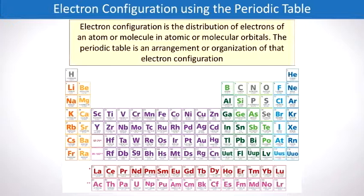Electron configuration is the distribution of electrons of an atom or a molecule in the atomic or molecular orbitals. The periodic table is an arrangement or organization of the electron configuration. In other words, the elements on the periodic table are organized according to their electron configuration.